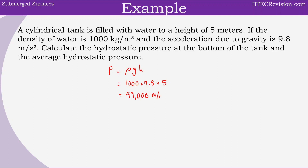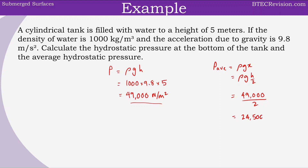The unit would be newtons per meter squared. Next, we can work out the average pressure, which is equal to rho g x. Since x is h over 2, we can divide the previous value by two. So that's 49,000 divided by two, which is equal to 24,500 newtons per meter squared.